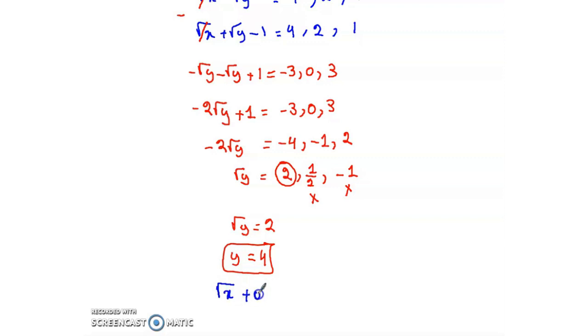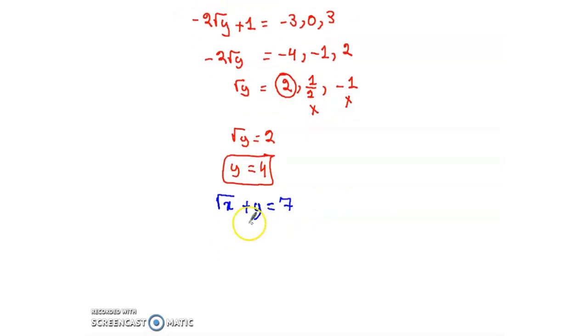So radical x plus y equals 7, and y equals 4, so radical x plus 4 equals 7. Radical x equals 3, then x equals 9.